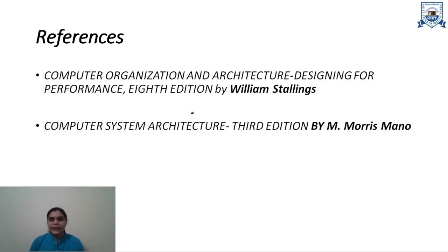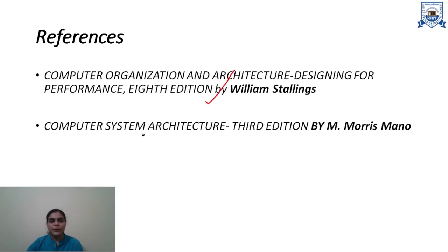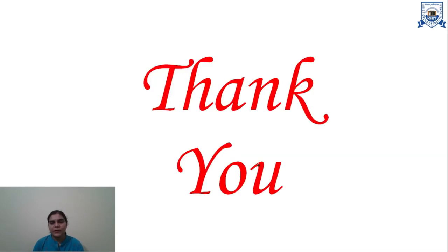In this lecture, we studied what a control unit is, the different types of control units, hardwired and micro-programmed control units, how the micro-programmed control unit works, its terminologies, and the organization of control memory. The content was taken from two books: Computer Organization and Architecture by William Stallings, and Computer System Architecture by Morris Mano. See you in the next lecture — happy learning, thank you.